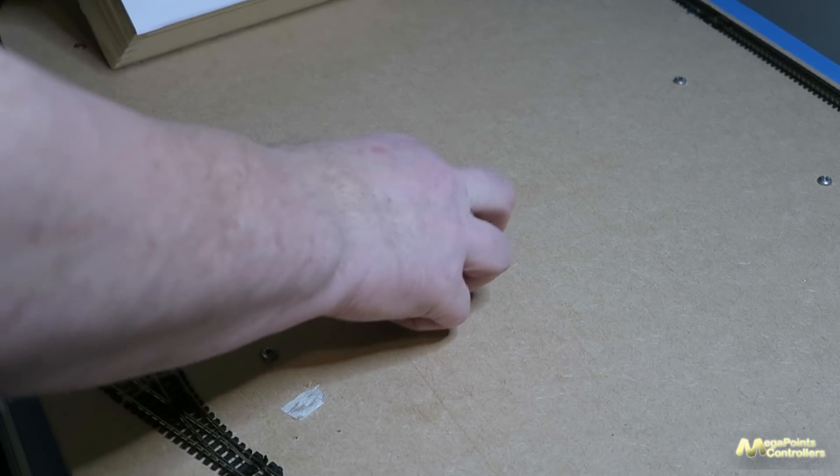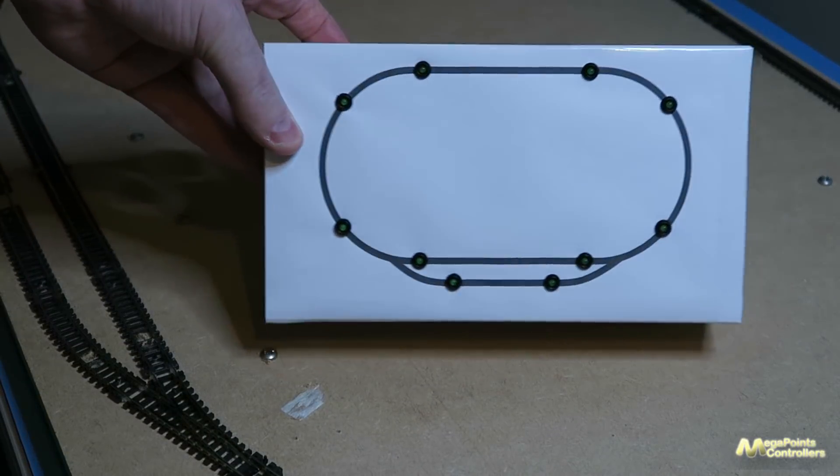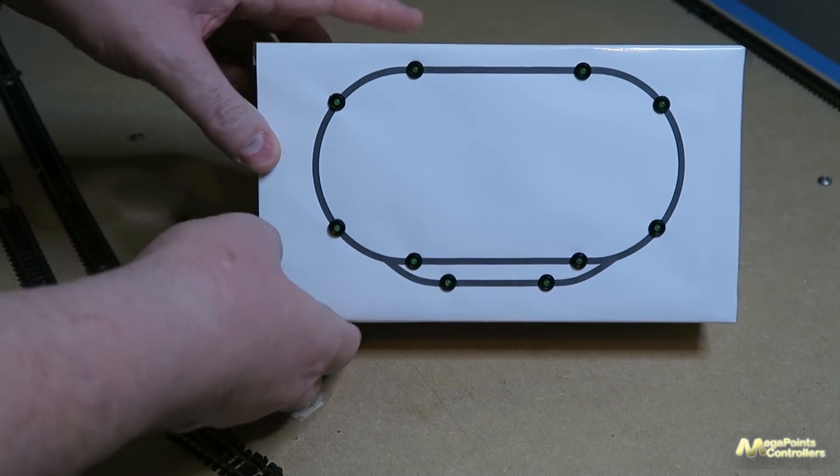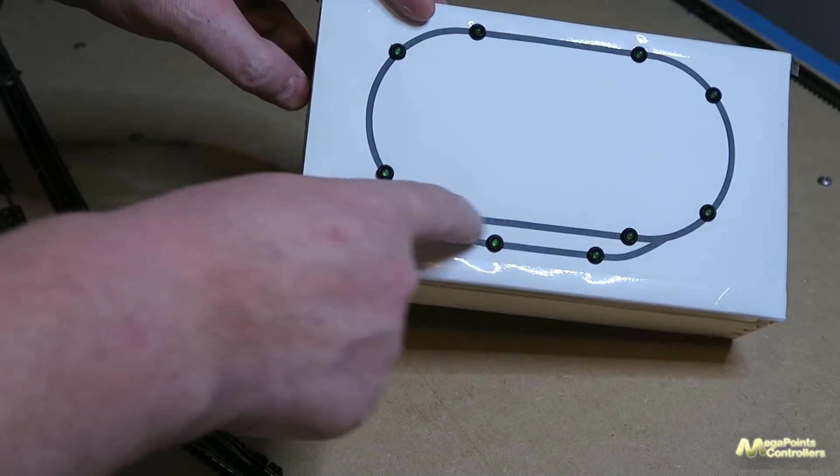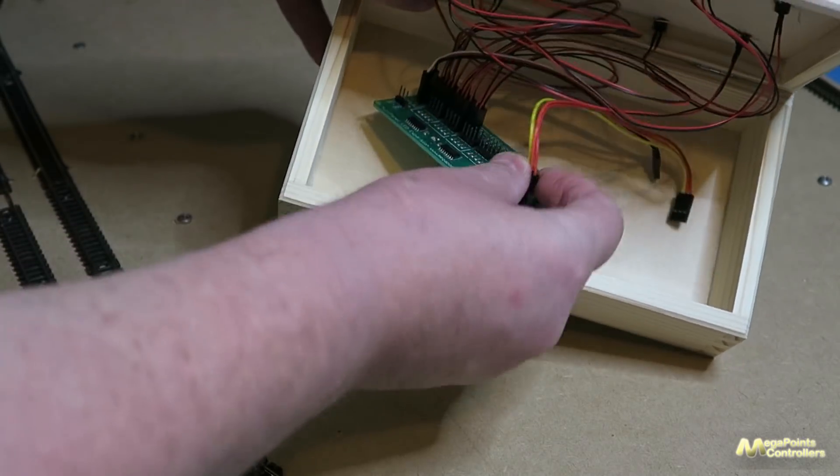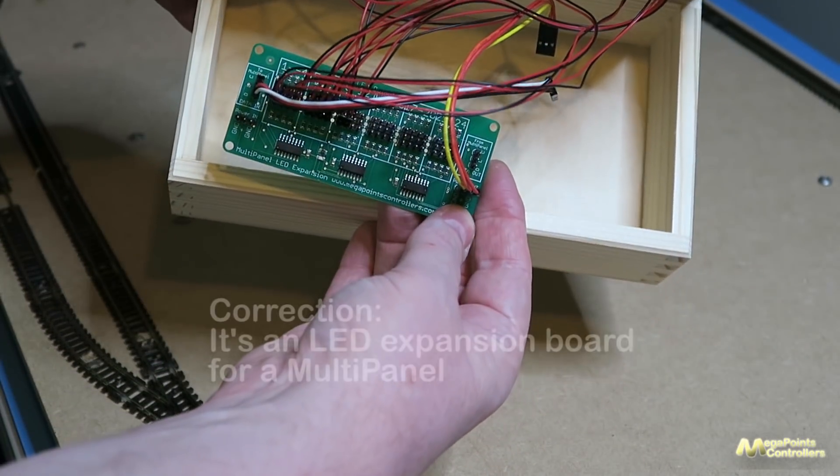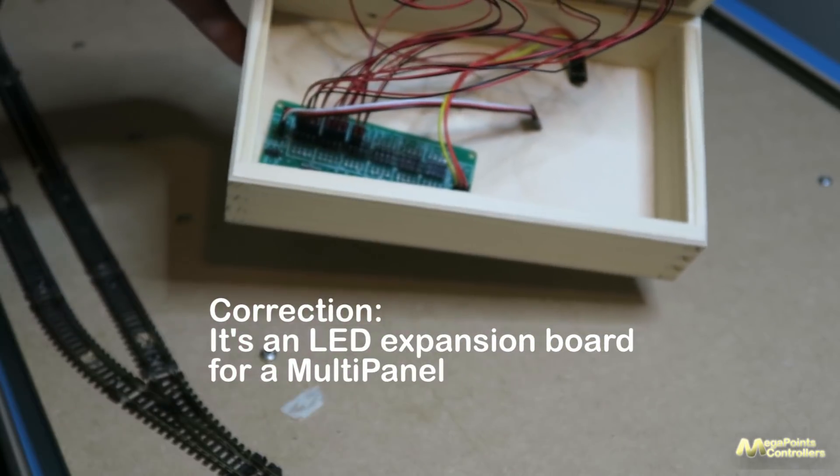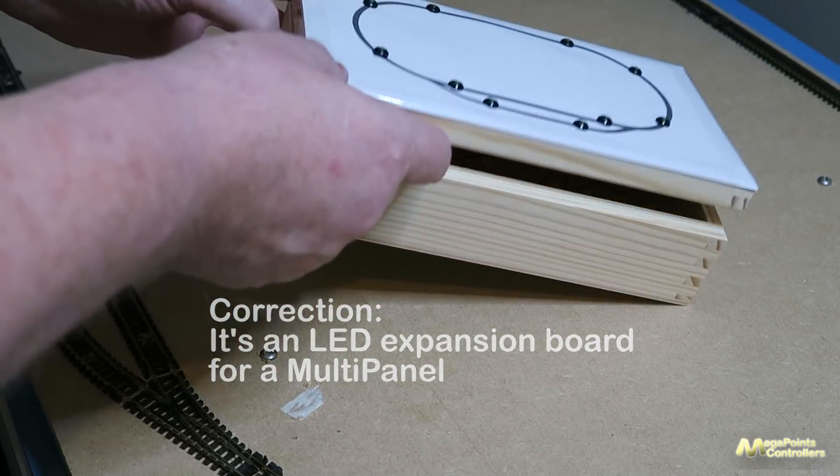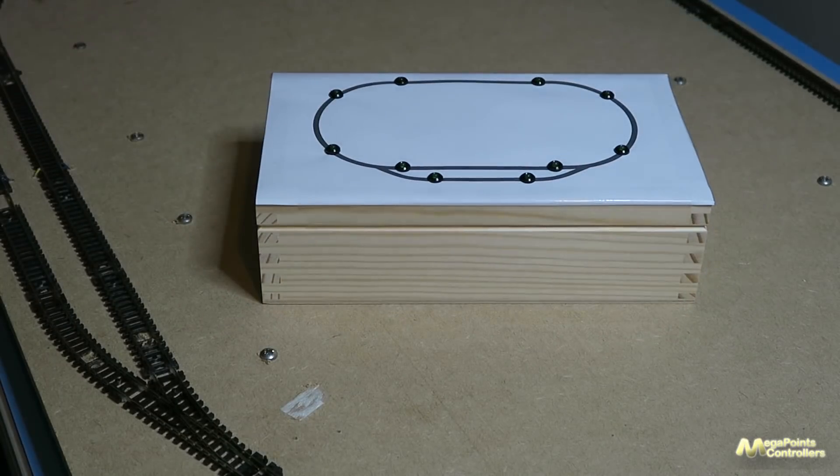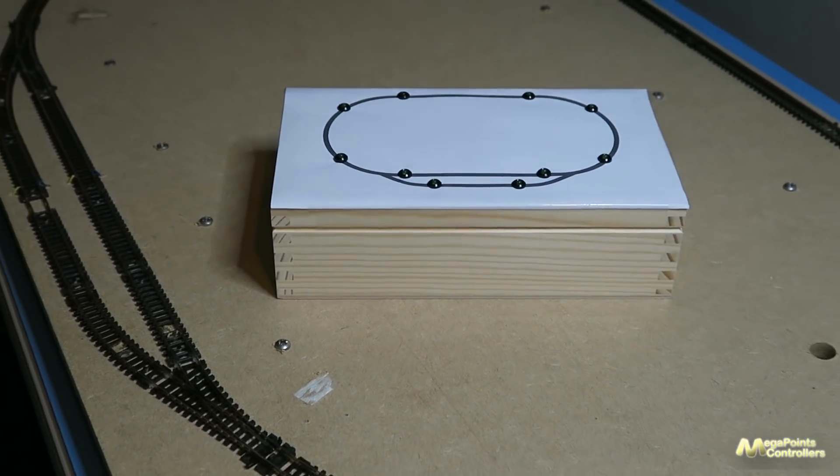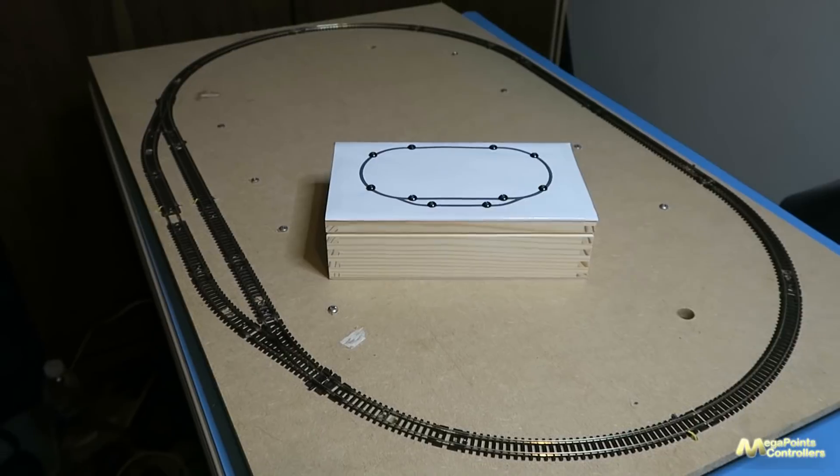So what I've done I've made a little mimic panel here and inside I've wired up the LEDs to an LED switch expander. I'll connect a multi-panel to this and we'll see it show the occupancy of blocks as the locos run around this little test track here.